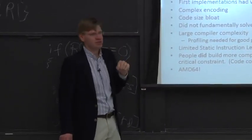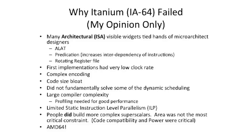Other problems: the first implementation had a very low clock rate — not a good start. Building these wide machines is hard. There was the 'speed demons vs. brainiacs' question of going wide versus long and narrow. There was big code size bloat. Itanium fundamentally did not solve all the dynamic scheduling problems that out-of-order superscalar could handle — for example, changing the instruction schedule based on whether a load hit or missed in the cache. There was also big compiler complexity requiring profiling, and not everyone wanted to profile. And there simply wasn't enough static instruction-level parallelism in all programs for the compiler to exploit.